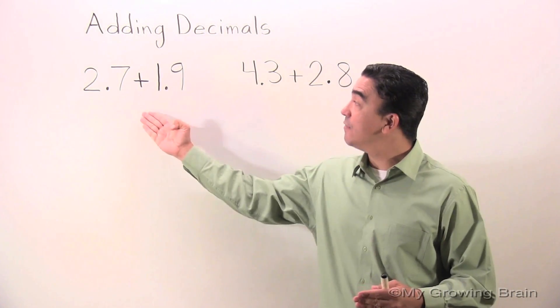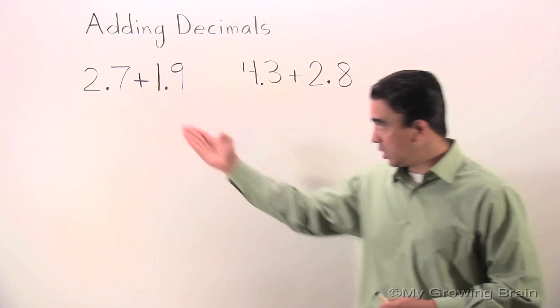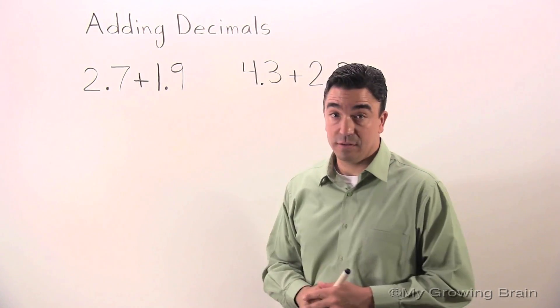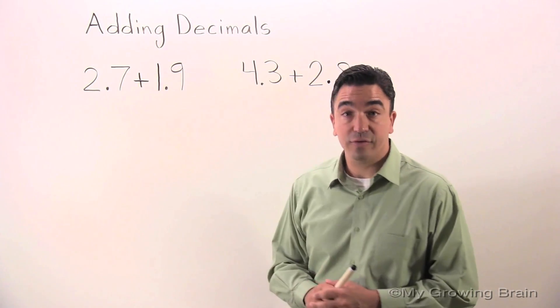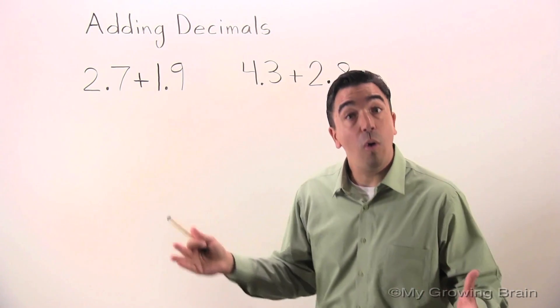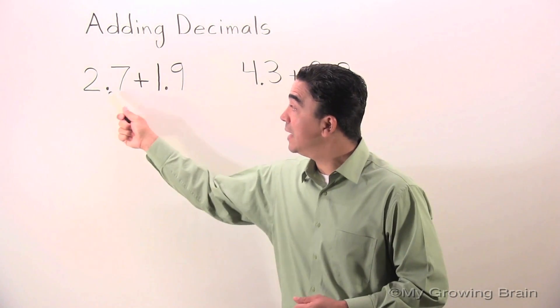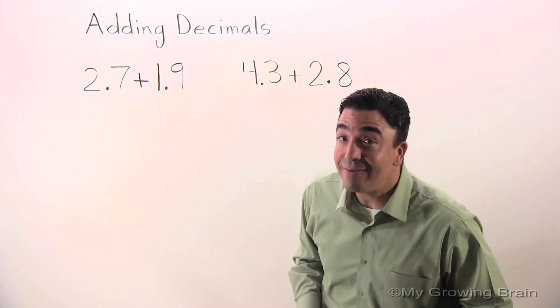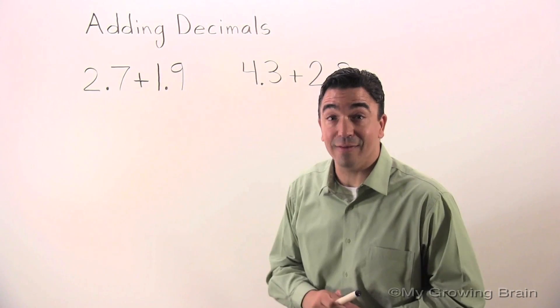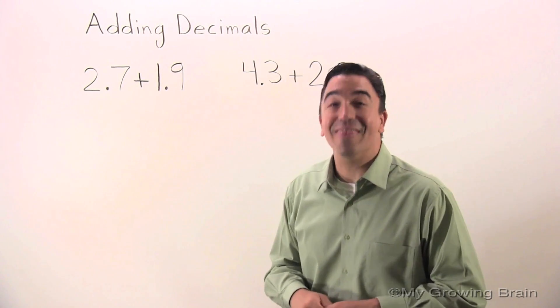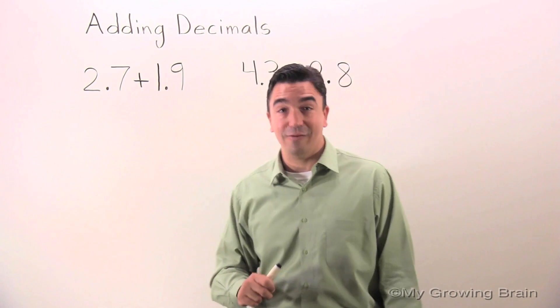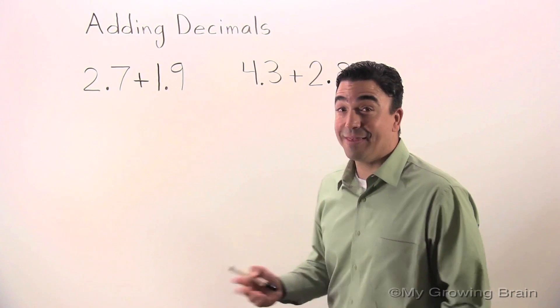As you can see I have two problems on the board. We're going to start with this one over here. 2.7 plus 1.9, or 2 and 7 tenths plus 1 and 9 tenths. Yes, that's right. The word and replaces the decimal.